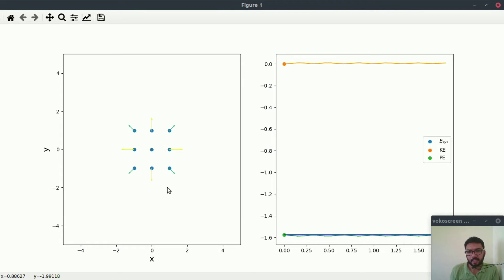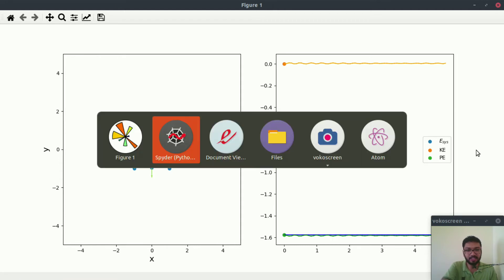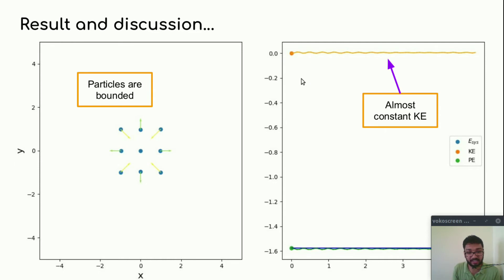Let's animate these results. The particles are kind of bounded to their positions — they are not much moving. As you can see, the kinetic energy is almost remaining constant. For further analysis, let's jump to our presentation.